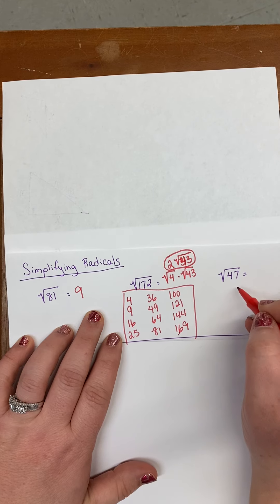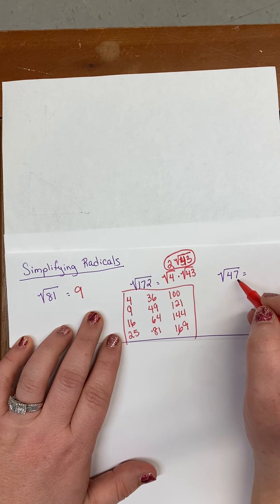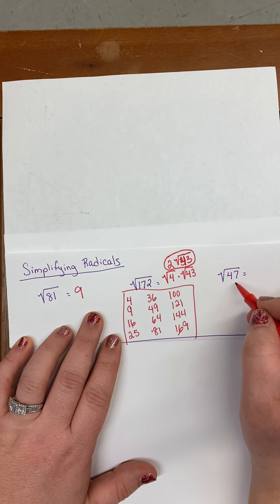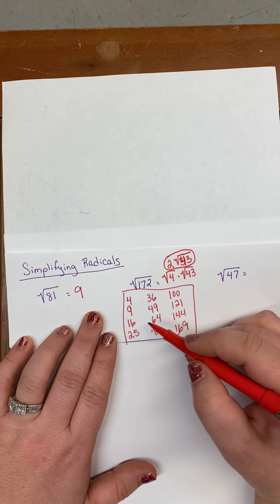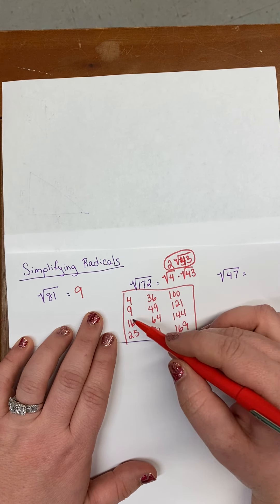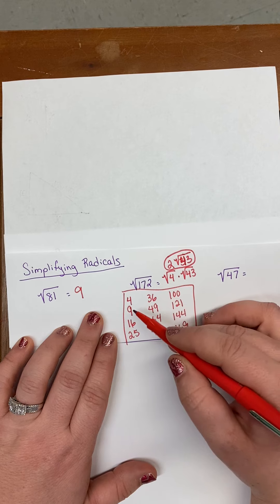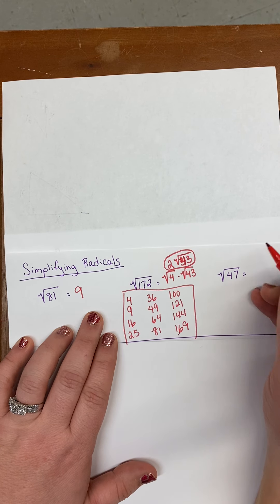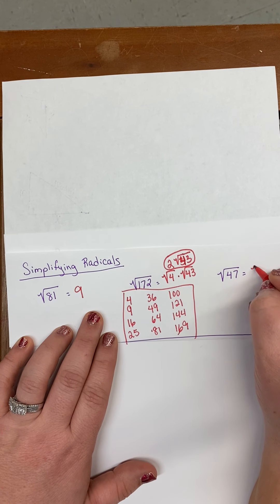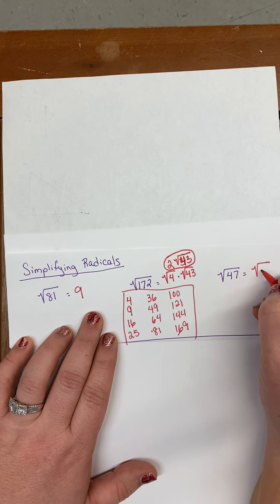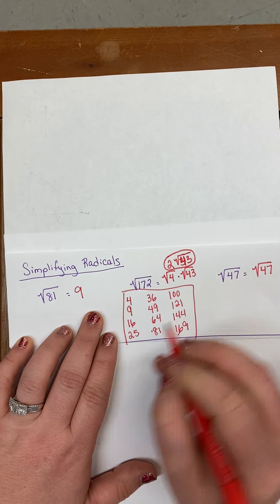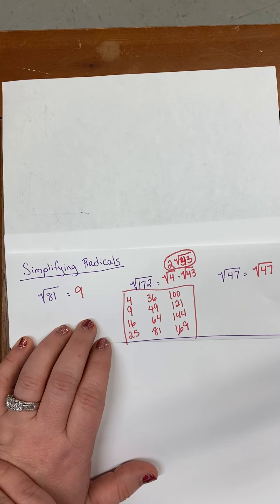47 does not have a factor of any of these perfect squares, so I cannot simplify it. The answer would just stay as square root of 47.